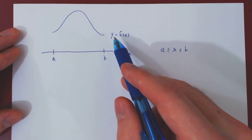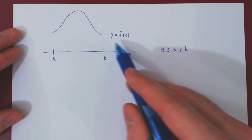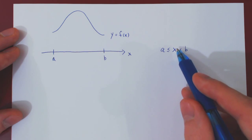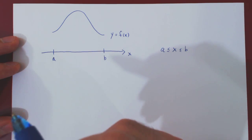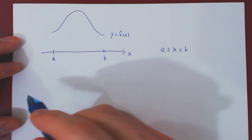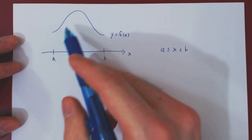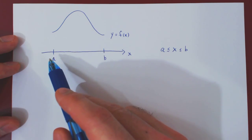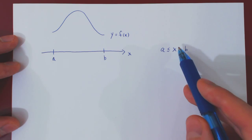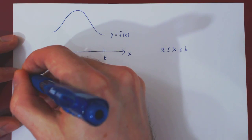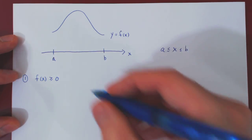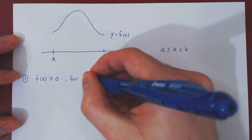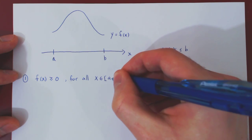What conditions must this function satisfy in order to be able to provide us with probabilities about the random variable x? The function f(x) must satisfy two conditions. Since probabilities are real numbers between 0 and 1, they are non-negative. So the first condition is that f(x) must be non-negative on the interval from a to b — that is, f(x) is at least as big as 0 for all values of x in the given interval.